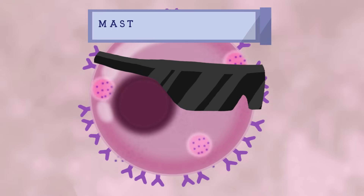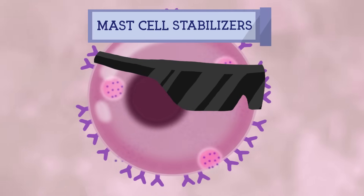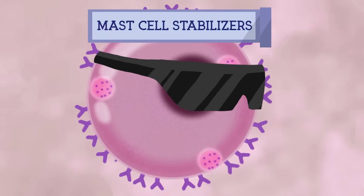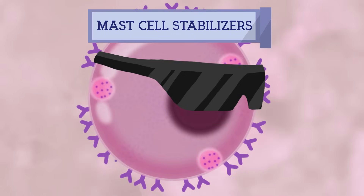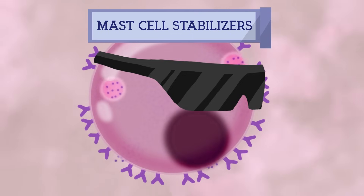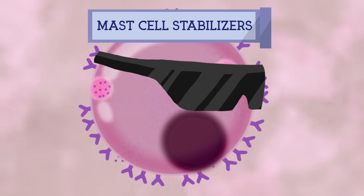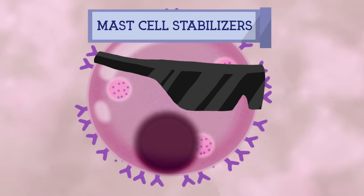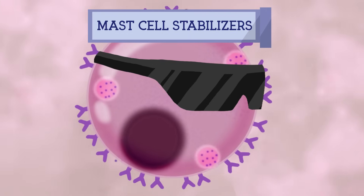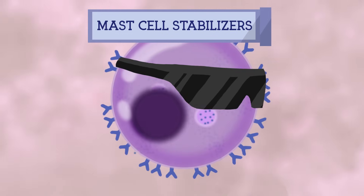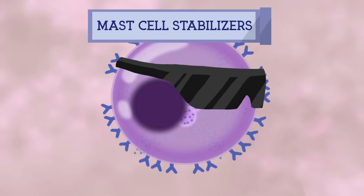4. Mast cell stabilizers. Mast cell stabilizers are common medications used to prevent or control certain allergic disorders. They block a calcium channel essential for mast cell degranulation, stabilizing the cell and thereby preventing the release of histamine.